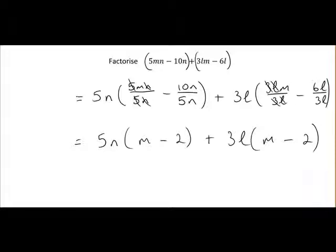So at this point we have it factorized, but as you can see we can tidy it up further. You can see m minus 2 is a common factor. So we're multiplying 5n by m minus 2 and 3l by m minus 2. So we can rewrite it like this, 5n plus 3l, so you're multiplying both of those by m minus 2. And that's it completely factorized.